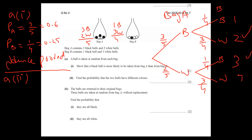Calculation: (3/5)(3/4) + (2/5)(1/4) = 9/20 + 2/20 = 11/20. So the probability of two balls of different colors is 11/20.